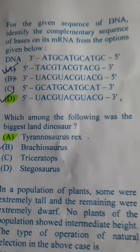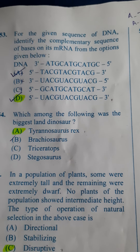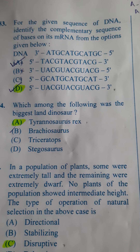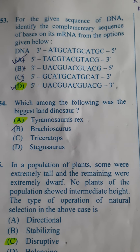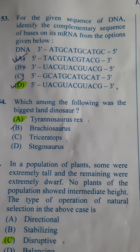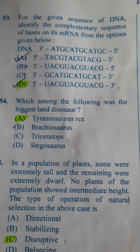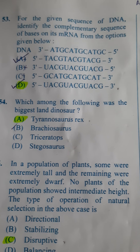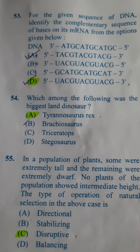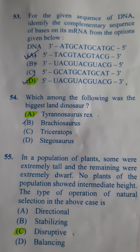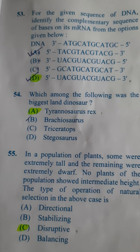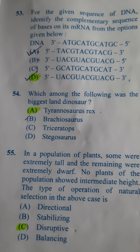Next: For the given sequence of DNA, identify the complementary sequence of bases on its messenger RNA. Please keep in mind that RNA will never have thymine — it will always have uracil. They have given a 3' to 5' sequence. The complementary base will be having a 5' to 3' sequence. Checking the complementation, D is the correct answer.